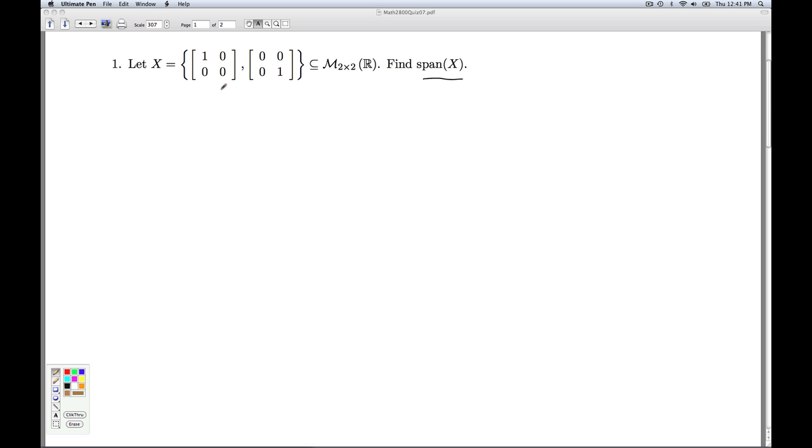So what is the span of a set of vectors? Well, by definition, it's a set of all linear combinations of those vectors. So if u is in the span of x, u has to look like some constant times the first vector in there, the first matrix, plus another constant times the second matrix.